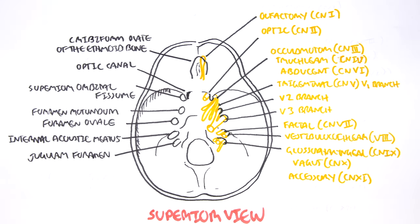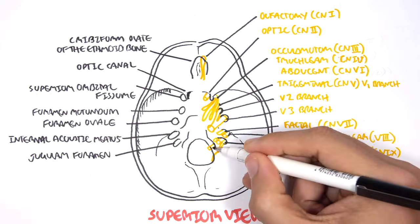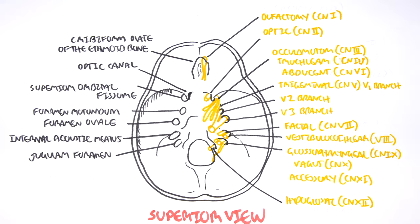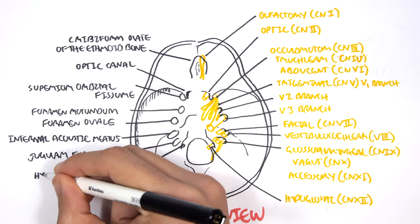Then you have the last cranial nerve, which is your hypoglossal nerve, which is your cranial nerve number twelve. This exits through the hypoglossal canal. Quite easy to remember.